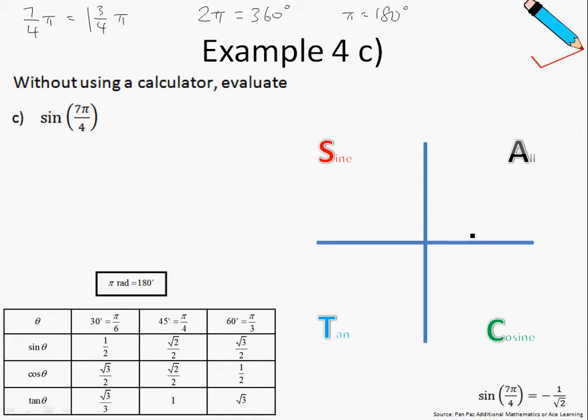So what does this mean? If we are trying to locate theta equals 7 over 4 pi on our x, y Cartesian plane, what we will do is move in an anti-clockwise direction from this point. If I move in an anti-clockwise direction up to this point, that will be pi, because 180 degrees is pi.